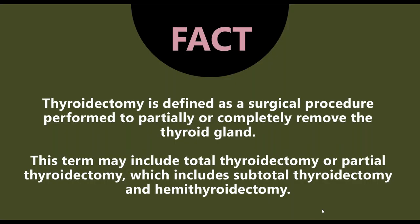Thyroidectomy is defined as a surgical procedure to partially or completely remove the thyroid gland. This includes total thyroidectomy (removing both lobes), partial thyroidectomy, subtotal thyroidectomy, and hemi-thyroidectomy (resection of only one lobe). The procedure may also be associated with removal of parathyroid gland tumors, which are very small glands located bilaterally near the thyroid.